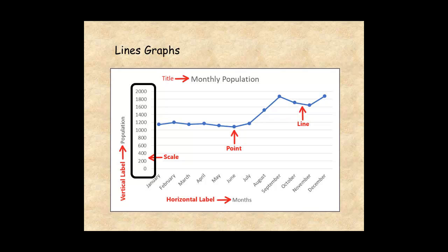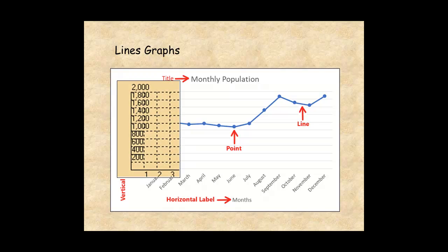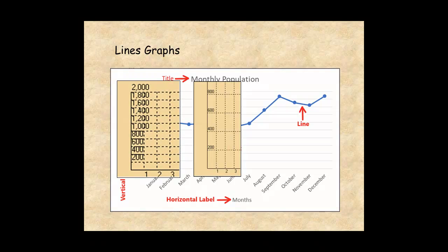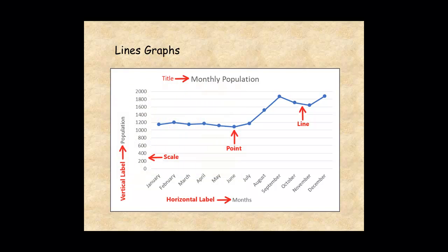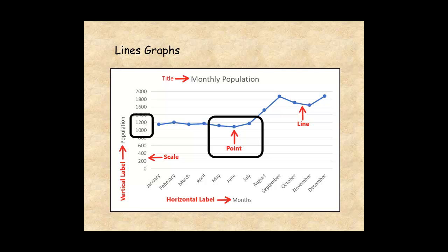Selecting the right scale can be a challenge. If there are too many scale marks close together or too far apart, they're not useful. The points or data points show the value of each data on the graph. For example, this point shows the population of about 1100 in June.